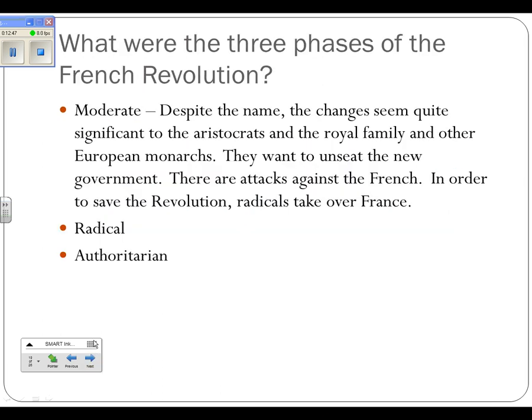So the French Revolution erupts. There will be a reading on that. The French Revolution goes through three phases. First is the moderate phase. Despite the name, it still seems pretty radical — the French Revolution actually maintains the royal family but greatly reduces their power and makes some radical changes. However, other European kings around France see what's going on and it scares them. So they launch attacks against the French, and in order to save the revolution, the radicals take over.